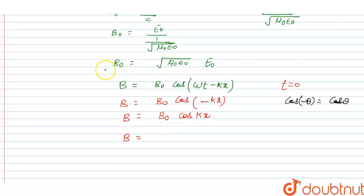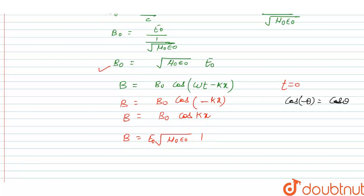This is the value of B: cos(kx). The value of B0 = √(μ0ε0) · E0, so B = √(μ0ε0) · E0 · cos(kx).